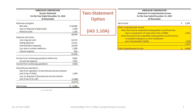Here is the Two Statement option. On the left is simply an Income Statement, or it could be called a Statement of Profit, that basically ends with Net Income. Then the second statement is the Statement of Comprehensive Income — again, both are for the year-ended. On the right, the Statement of Comprehensive Income starts with Net Income and then shows the OCI section, which is the same as the Single Statement option.